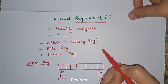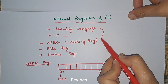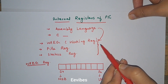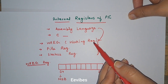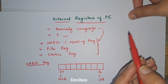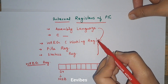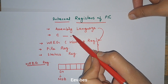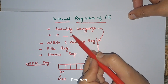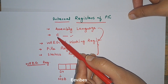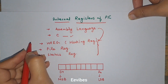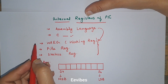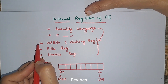For understanding assembly language programming, you must have an idea of the internal registers of the PIC microcontroller, because in assembly language we directly address those registers or access them using their mnemonics. Later on we will also see how we can program this microcontroller in C language.